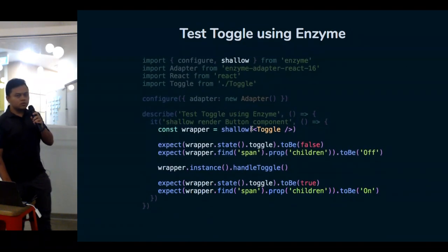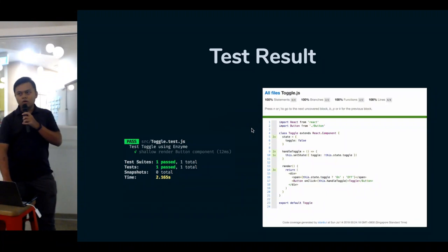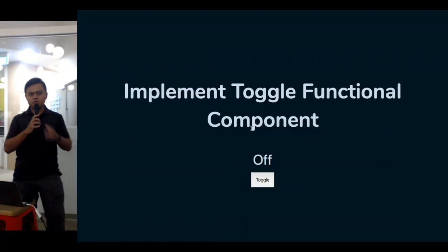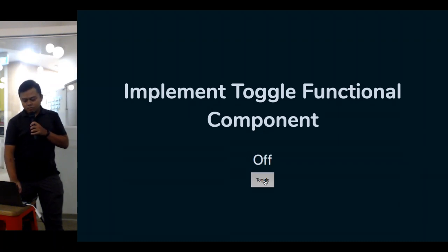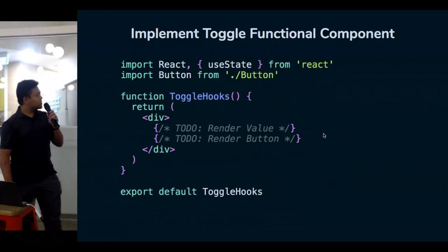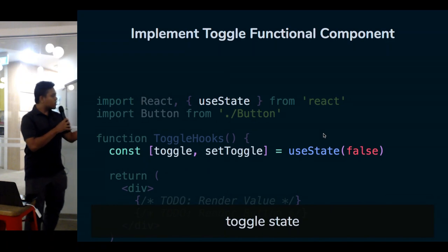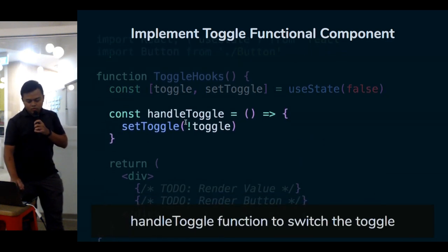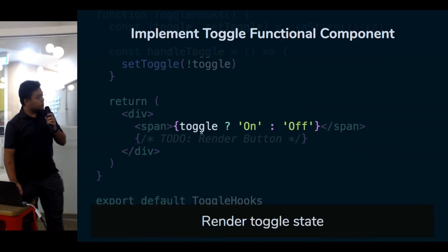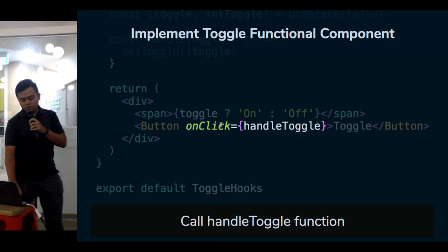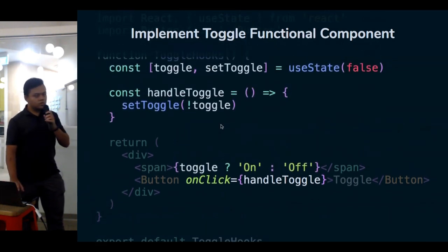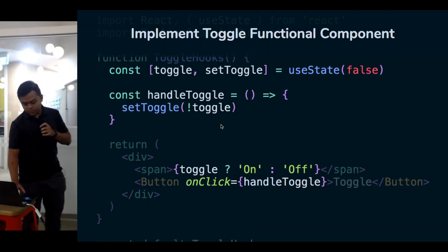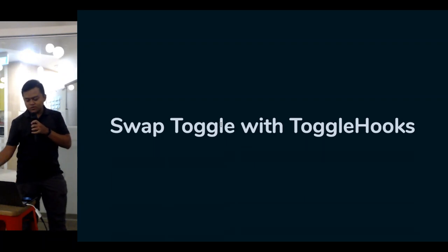This test is quite simple and it passes. Now let's say you want to move to React hooks because it's cool. Here's the component built using hooks. We call useState with false as an initial value, have a handle function to negate the toggle value, display 'on' or 'off' text based on the toggle value, and trigger the handler using the button. It's more concise — that's why people prefer hooks over class components.